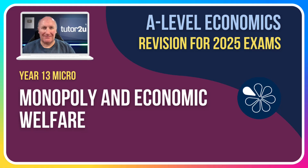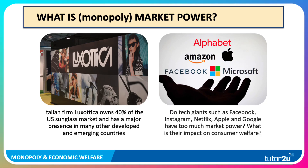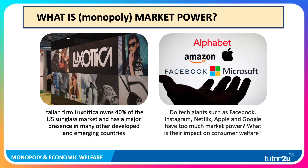Hi there. In this revision video we're going to take a look at the key concepts of monopoly and economic welfare. Monopoly or market power is basically when a firm dominates a market, and it gives the firm significant leverage, autonomy and freedom as to how much they can charge for a good or service. A good example is the Italian firm Loxotica, which owns over 40% of the US sunglass market and has a major presence in many other advanced and emerging countries.